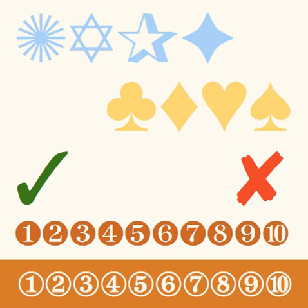The ITC glyph set is included in Unicode and it is one of the basic 14 typefaces guaranteed to be available for PDF files. Zapf Dingbats, the PostScript version of ITC Zapf Dingbats, is distributed with Acrobat Reader 5 and 5.1.